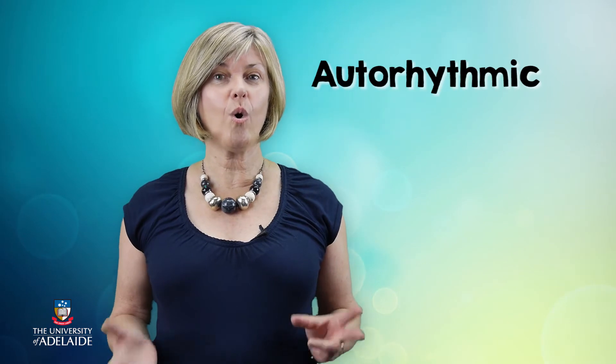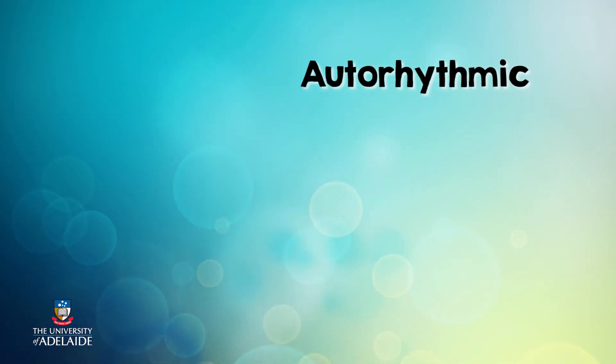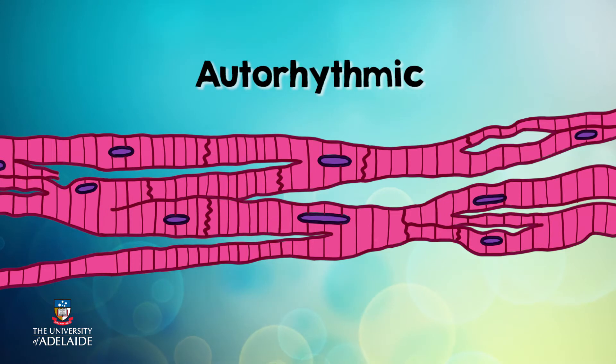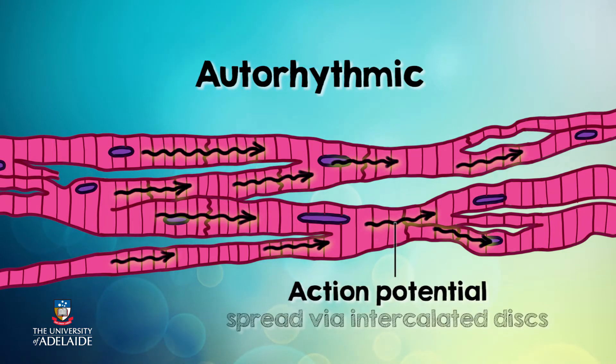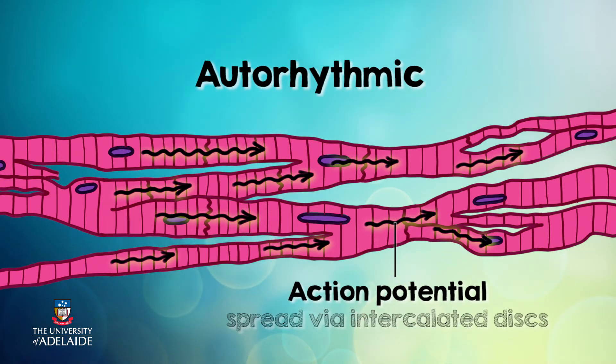Another really interesting feature about cardiac muscle cells is that they don't need a nerve supply to contract — they're what we call auto-rhythmic. This is due to the presence of pacemaker cells that stimulate the cardiac myocytes to contract. The intercalated discs connect the cells and spread this action right around the muscular wall of the heart. The nervous system can stimulate the heart rate to go up or down, but it doesn't actually make the heart beat.